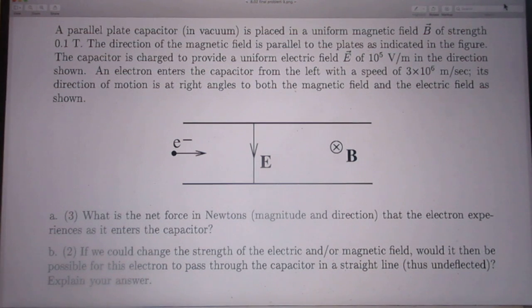A parallel plate capacitor in vacuum is placed in a uniform magnetic field B of strength 0.1 Tesla.